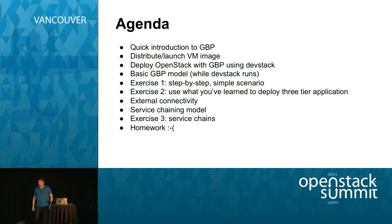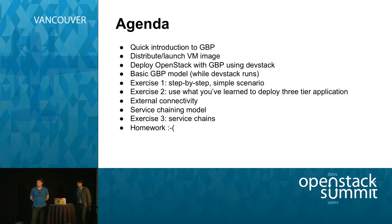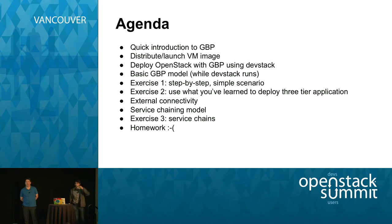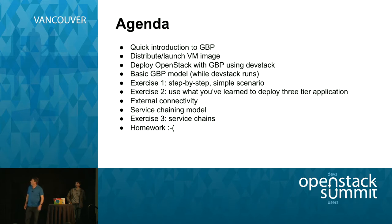The third step is deploying OpenStack with GBP included. We have a DevStack branch configured for that. While DevStack is running, we'll talk about the basic GBP model. The first exercise is a step-by-step simple scenario. The second exercise is more complicated. We'll also talk about external connectivity, service chaining, and then do an exercise related to that. Depending on how far we get, there might be homework.